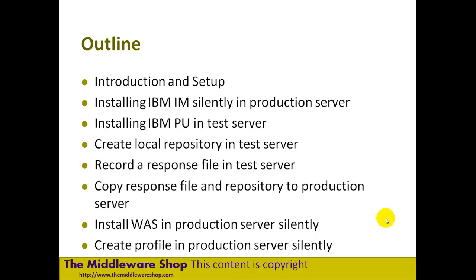We're going to look at a tool called the IBM Packaging Utility, which is not a well-known tool but very useful. We're going to create a local repository which can then be used to copy over to a production server. As part of our silent installation we're going to use IBM Installation Manager as a GUI and record a response file. That response file is then used against the repository to perform an actual installation.